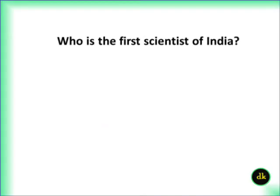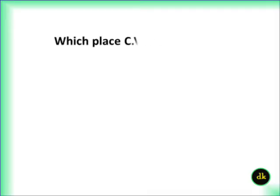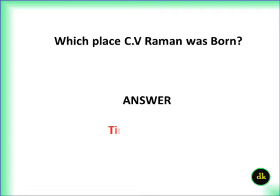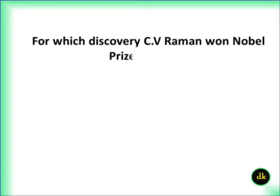Who is the first scientist of India? C.V. Raman. Which place was C.V. Raman born? For which discovery C.V. Raman won Nobel Prize in 1930? Scattering of light.